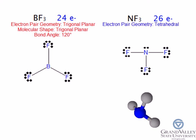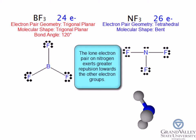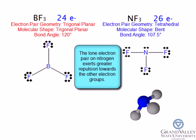The lone electron pair on nitrogen exerts greater repulsion towards the other electron groups, causing the bond angle between the fluorine atoms to be 107.5 degrees rather than 109.5 degrees.